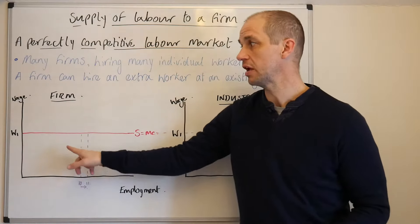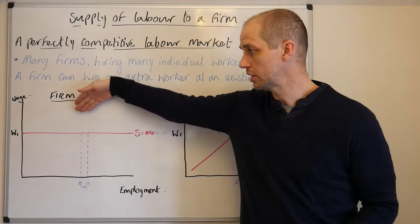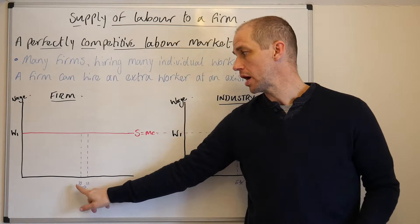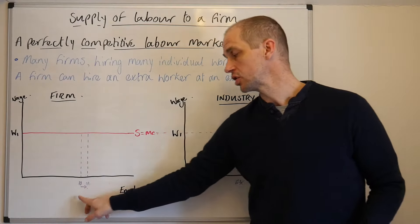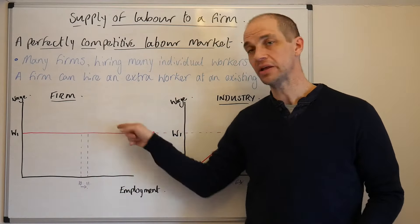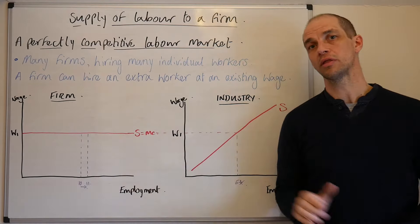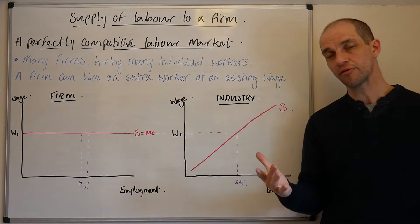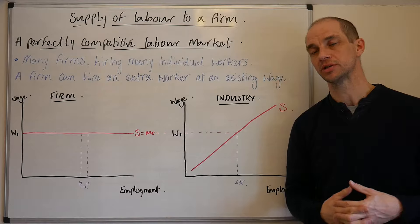We can see this on a graph where the y-axis shows the wage and the x-axis shows the level of employment. W1 represents the wage, and this is the firm's supply curve. As they increase their labour force from 10 to 11 workers, they pay the same wage — exactly the same to the 10th and the 11th worker. There is no additional cost in hiring, and this is very different from what we will see in the next lesson on imperfectly competitive labour markets.